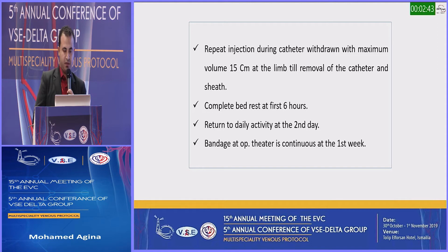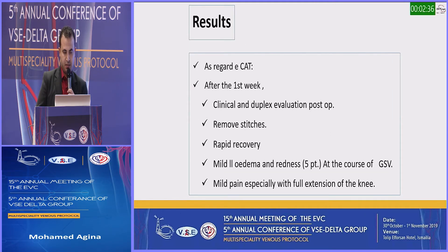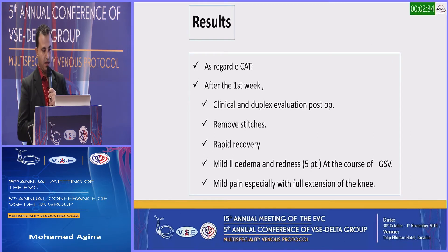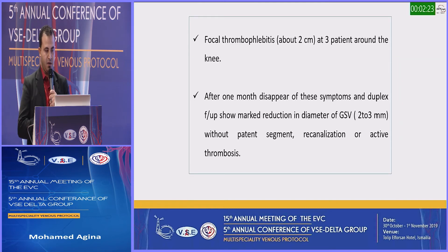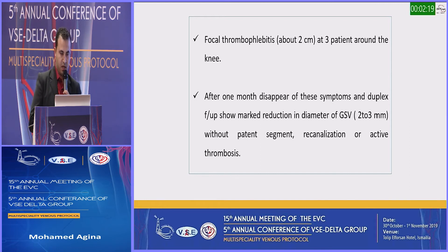Complete bed rest for the first 6 hours, return to daily activity on the second day, and bandage at the operative site is continued for the first week. Results for ECAT after the first week: clinical duplex evaluation post-operatively showed rapid stitch removal, rapid recovery, mild edema and redness in 5 patients along the course of the great saphenous vein, and mild pain especially with full extension of the knee. Focal thrombophlebitis of about 2 cm at 3 patients around the knee.